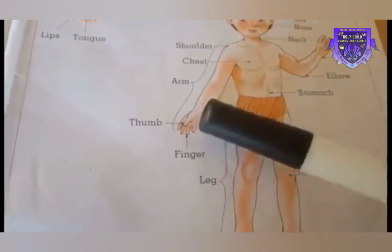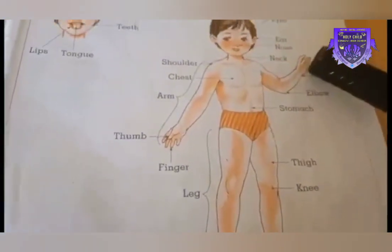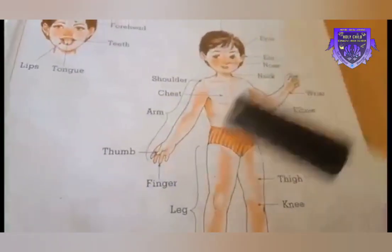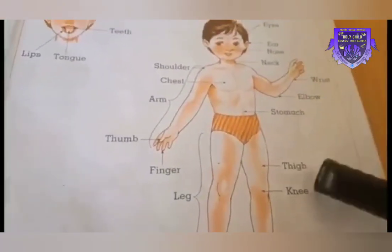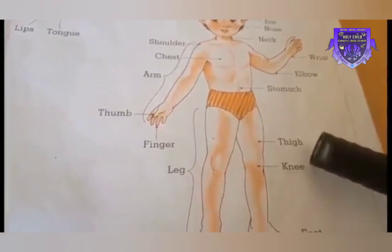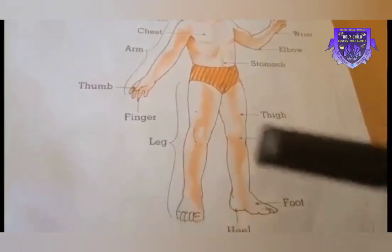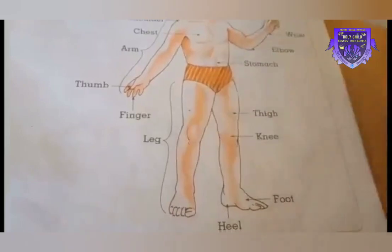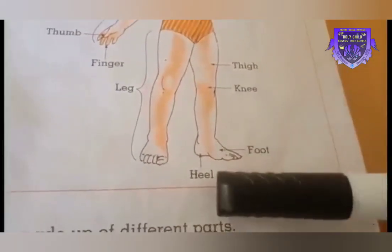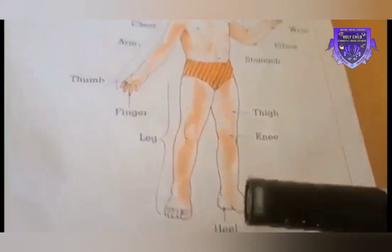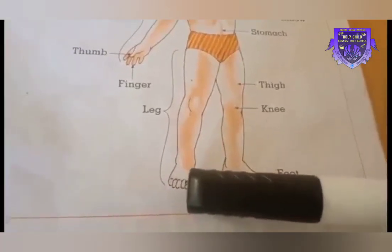In one hand we have five fingers, and in the other hand five, so altogether we have ten fingers. Thigh, knee, leg, foot, heel, and toes.